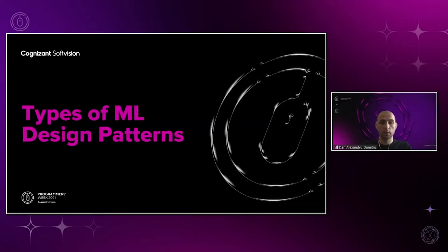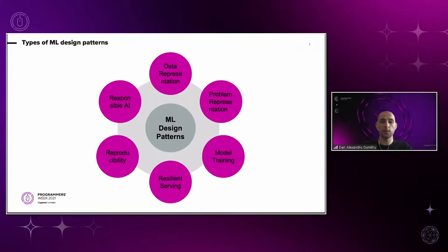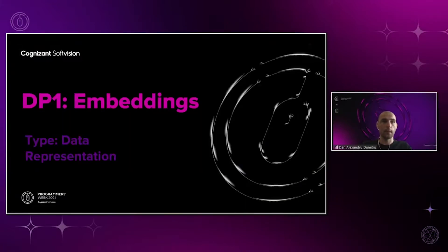Let's look at what types of design patterns we have, based on the steps in a typical ML flow. We have design patterns related to data representation, problem representation, model training, serving, reproducibility, and last but not least, responsible AI — which is basically explainability. Because there are many design patterns and we don't have time to cover them all, I picked some commonly known but also some interesting ones that I hope you will like. The first design pattern is embeddings — a very well-known data representation type design pattern.